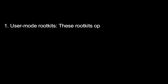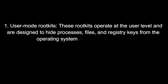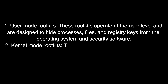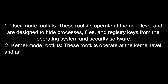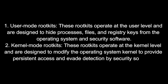1. User Mode Rootkits. These Rootkits operate at the user level and are designed to hide processes, files, and registry keys from the operating system and security software. 2. Kernel Mode Rootkits. These Rootkits operate at the kernel level and are designed to modify the operating system kernel to provide persistent access and evade detection by security software.